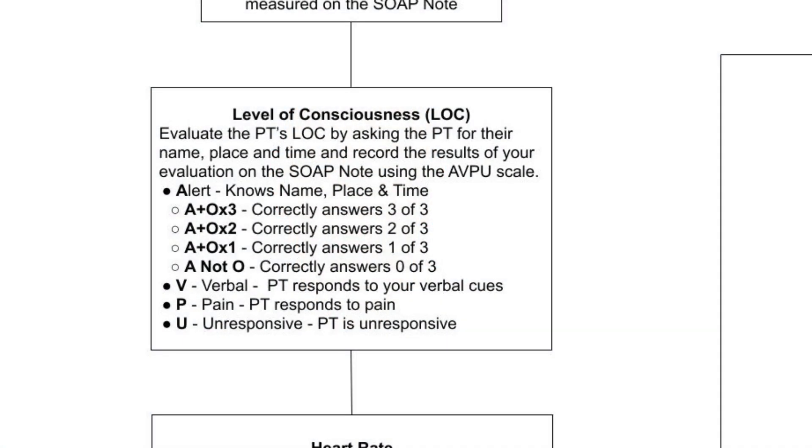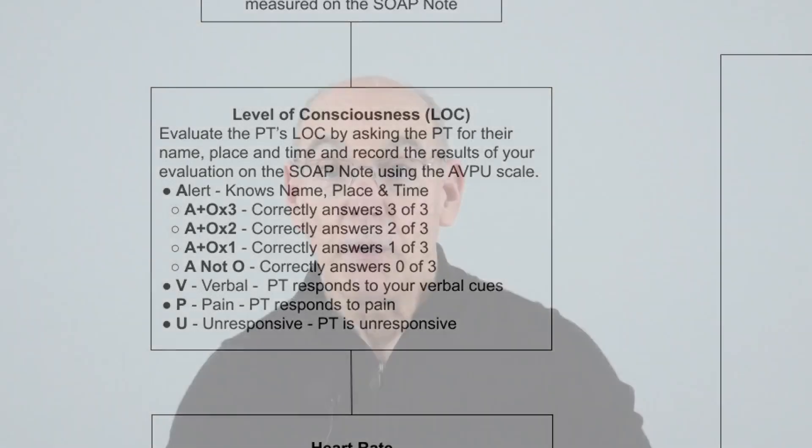V — Verbal Response: If the patient is not fully alert but responds to verbal stimuli, they are classified under verbal response. This means if you speak to the patient or give them a command, they can respond in some manner. The response can be in the form of words, which may or may not be coherent, or simple sounds. The key factor is that the response is initiated by verbal stimulation.